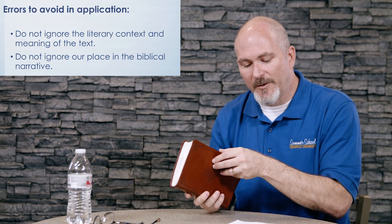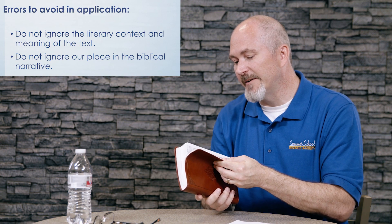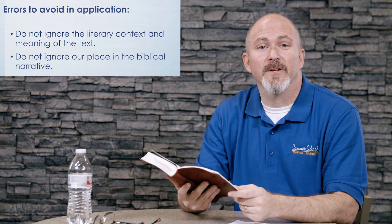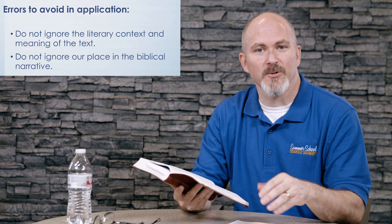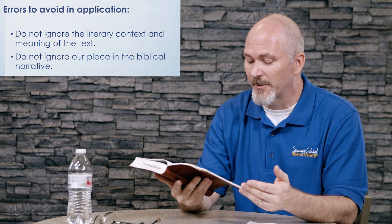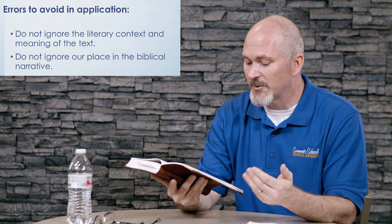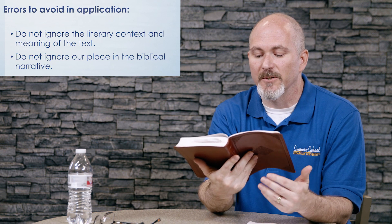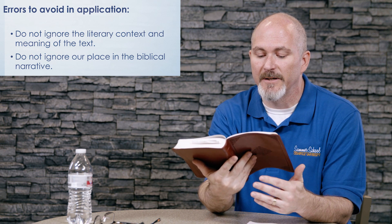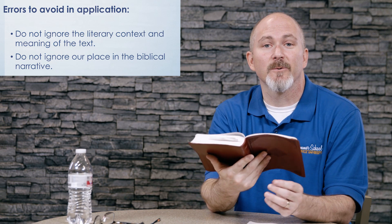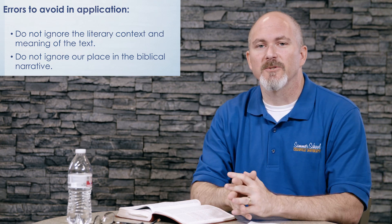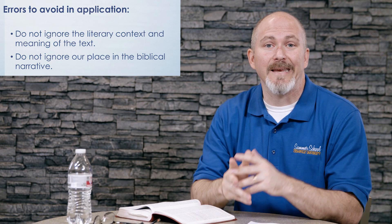Let me give an illustration. If you turn to Leviticus chapter 11 — we're smack dab in the middle of the law, the first five books of the Bible. The Israelites had several unique characteristics, one of them being their diet: the foods they were allowed to eat and the foods they were not allowed to eat. Leviticus 11, verse 29 says, 'These are unclean to you among the swarming things that swarm on the ground: the mole rat, the mouse, the great lizard of any kind, the gecko, the monitor lizard, the lizard, the sand lizard, and the chameleon.' In other words, God doesn't want the Israelites to eat lizards — these are something they were supposed to abstain from.